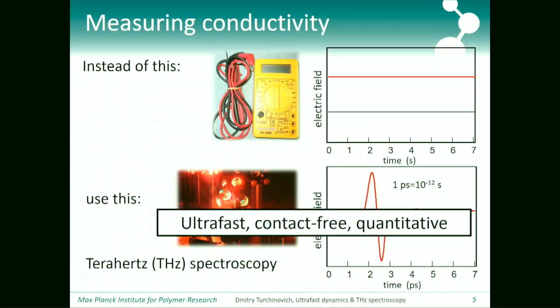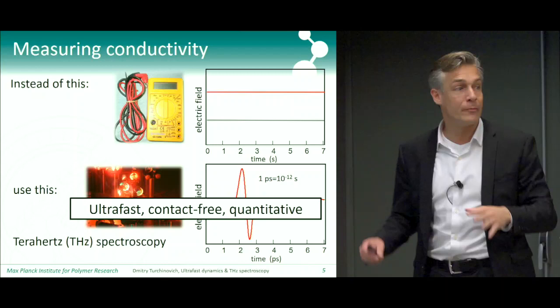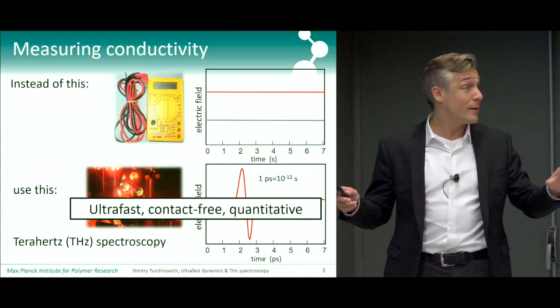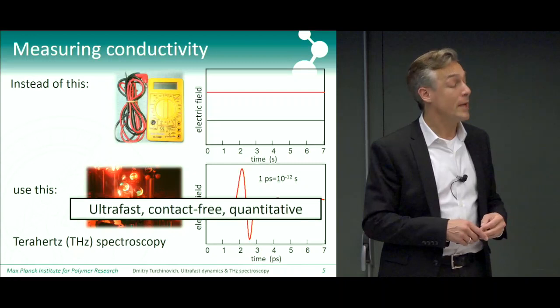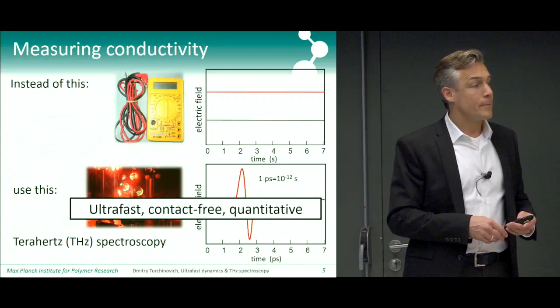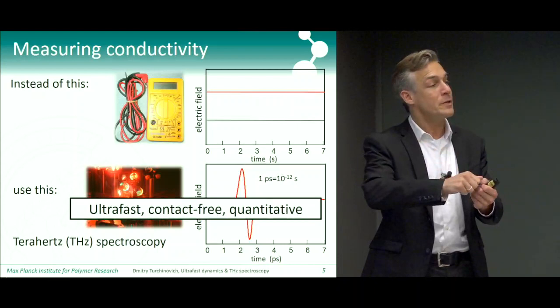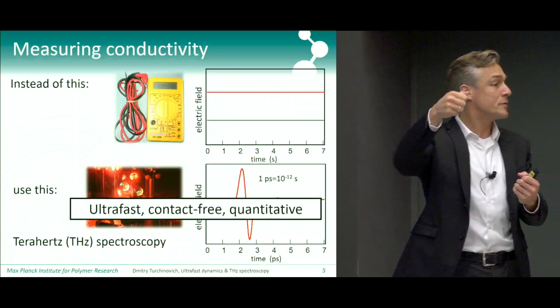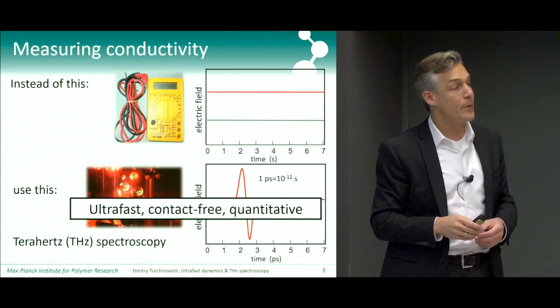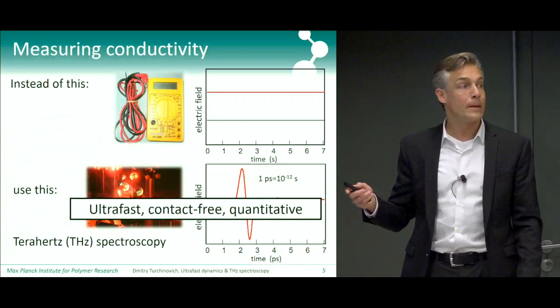CVD stands for chemical vapor deposition — it's a way to make large-area graphene. Regarding the loss in pulse amplitude: yes, some energy is dissipated in the system. The electrons scatter off phonons, which gives rise to the decrease in amplitude. So effectively it is measuring the resistivity.